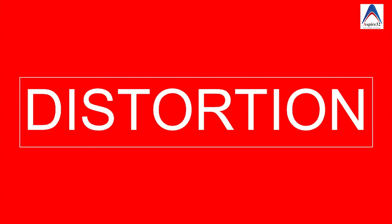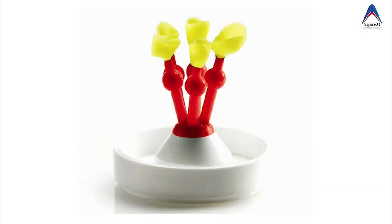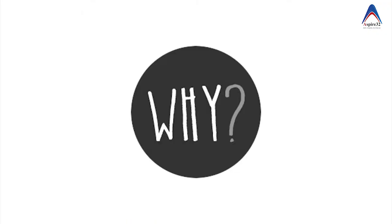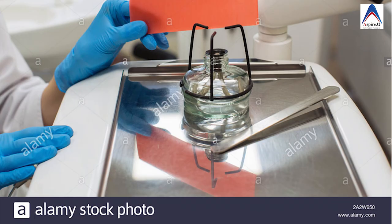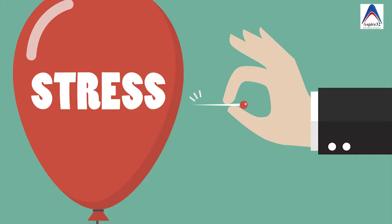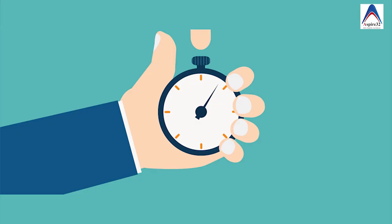Let's talk about the first defect: distortion. Distortion means your final cast restoration doesn't match the tooth preparation you have done. This depends on two factors. The first is the wax itself — if the wax pattern gets distorted, your final cast restoration will also be distorted. Wax distorts because it has memory, and if subjected to various temperatures, stress builds up in the wax pattern. If you have not invested this pattern very soon, this stress will be relieved and the wax will try to return to its original position. To avoid this, invest the wax pattern as soon as possible and avoid subjecting it to a lot of temperature changes.